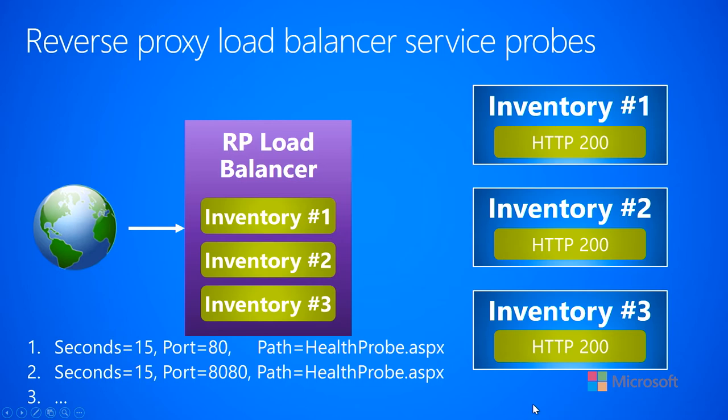You can say probe it on port 80, and then another one on port 8080. You specify a path, so this would cause the load balancer to make an HTTP request to the IP address for inventory instance one, colon port 80, slash healthprobe.aspx, or whatever you want. The load balancer will send this probe out to all three different virtual machines it knows about, every 15 seconds.